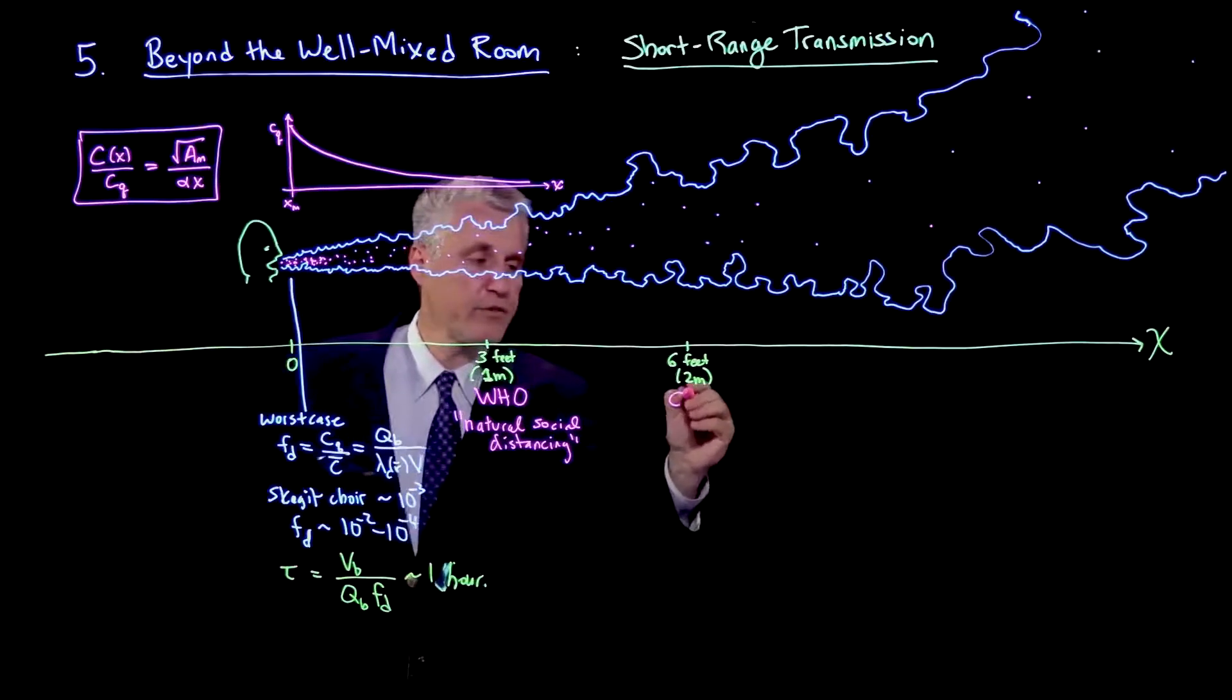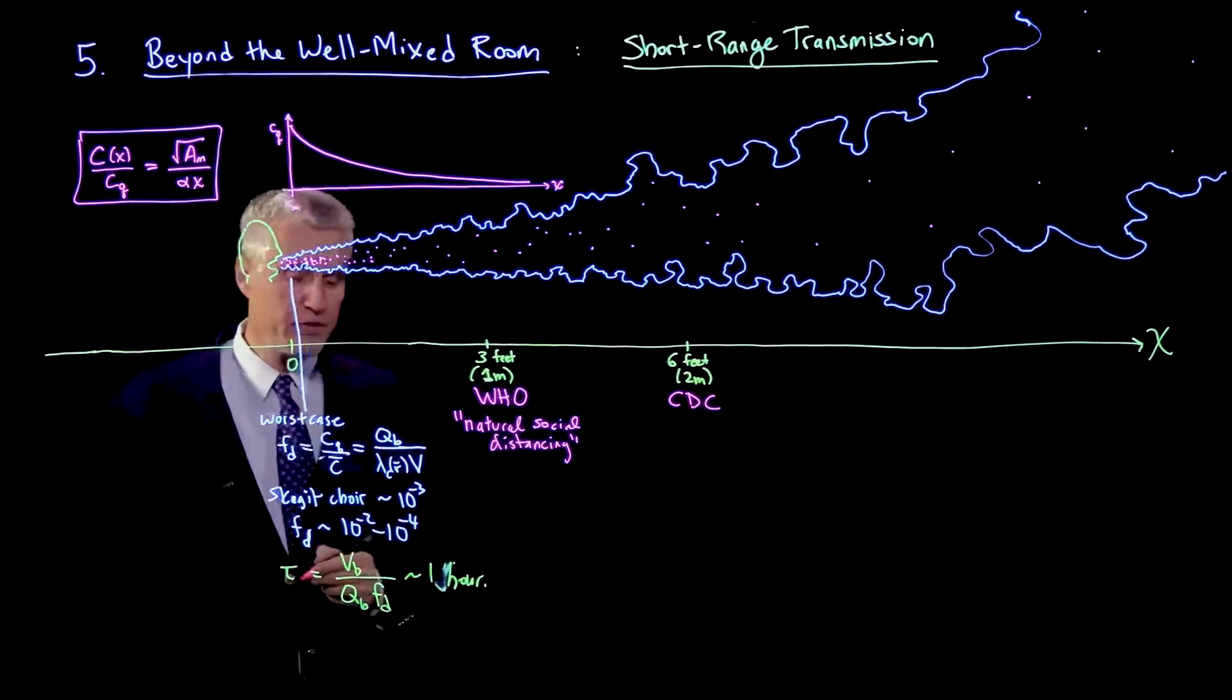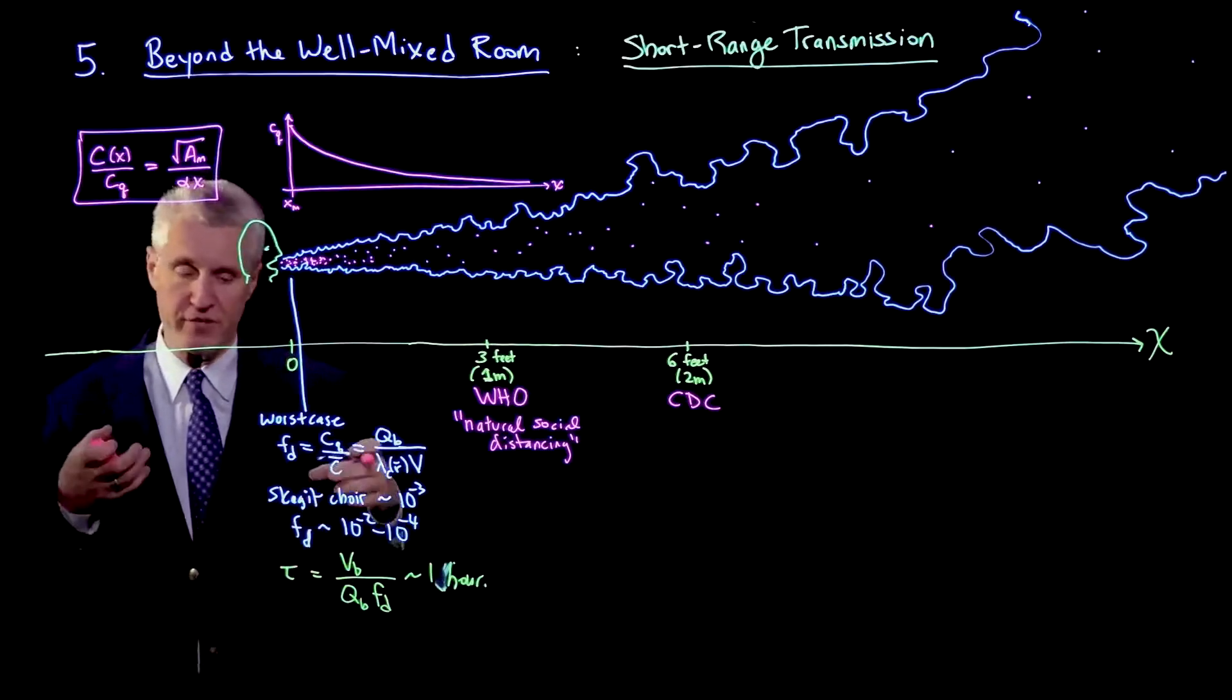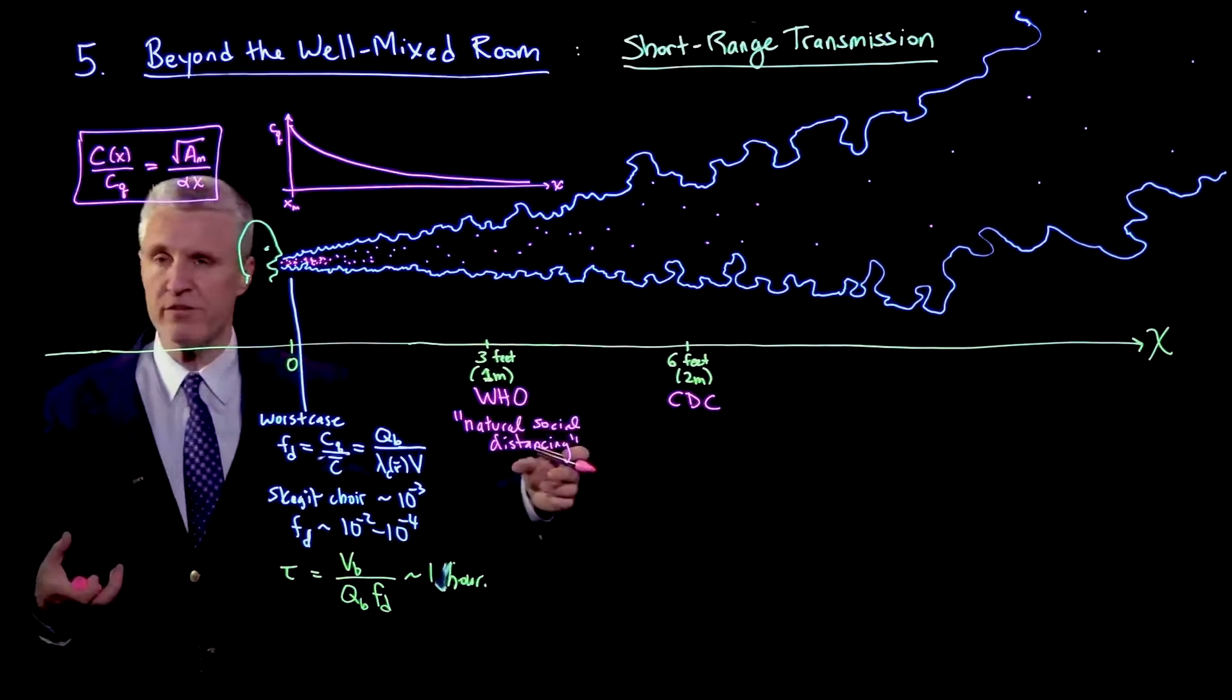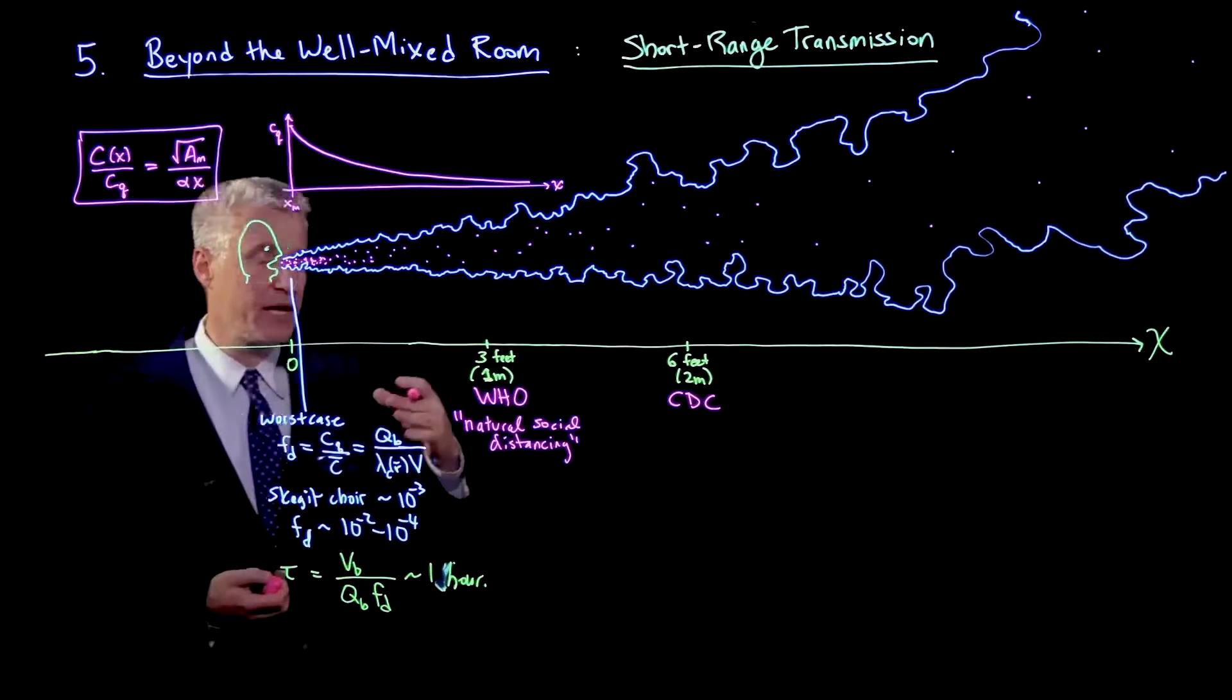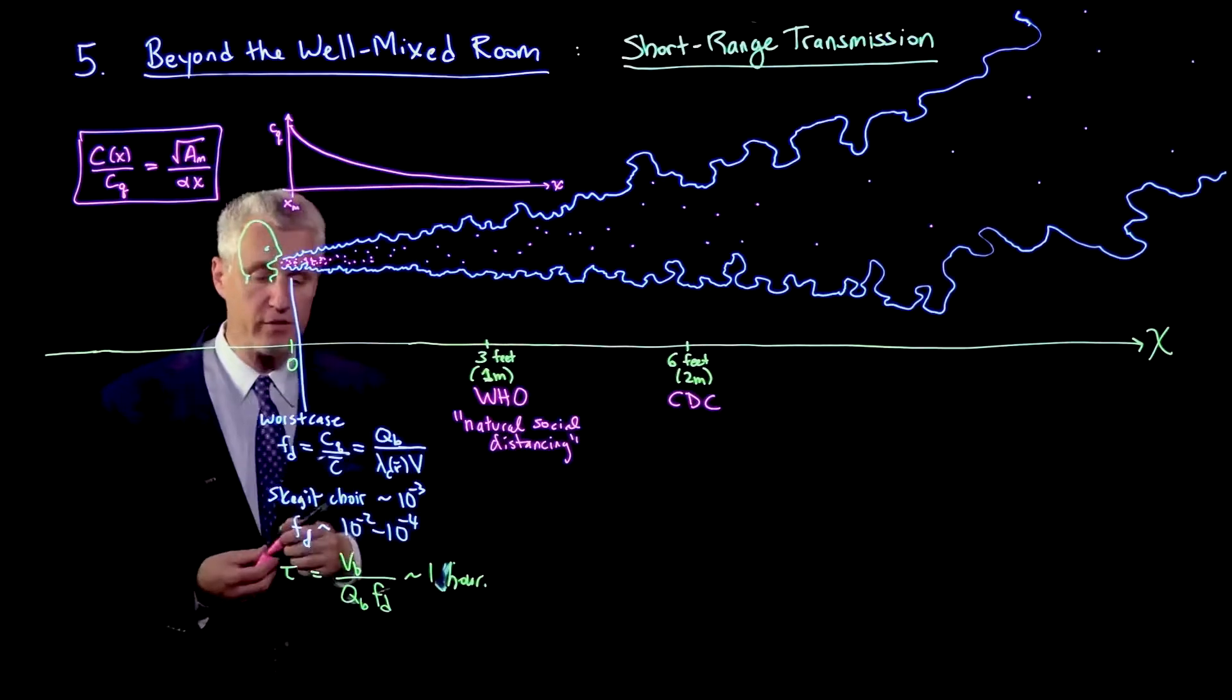The CDC in the United States has imposed a 6 foot rule. It's been interpreted so strictly that you can find floor stickers exactly 6 feet apart in all sorts of indoor spaces, even when people are wearing masks. We can ask what is the level of concentration there.